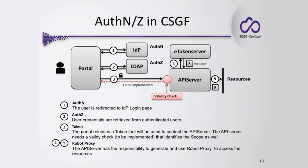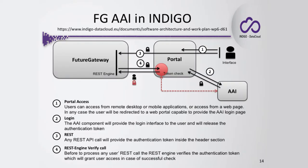If the authentication is successful, the portal will contact the unHelm server in order to get the user authorization records. Then the portal will generate a token in order to contact the API server. This is the way the Catania Sense Gateway framework can be used to start making REST API calls provided by the Future Gateway.